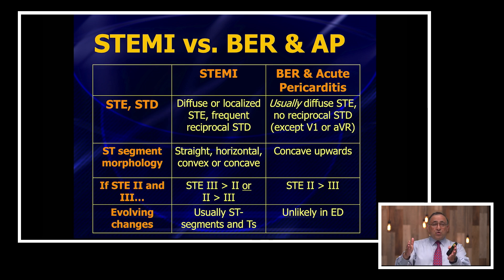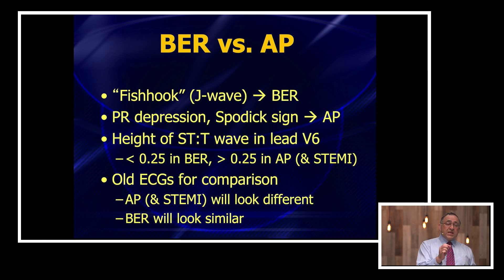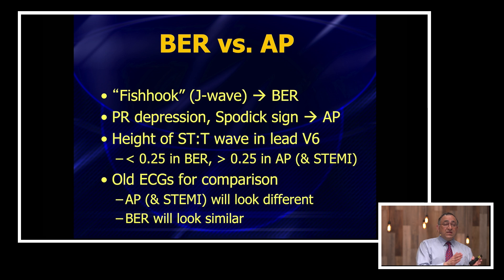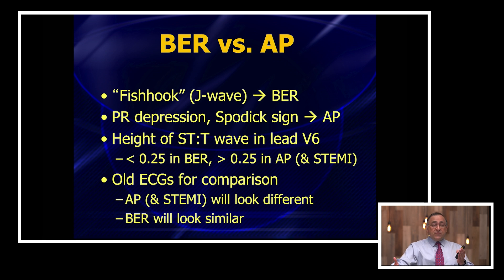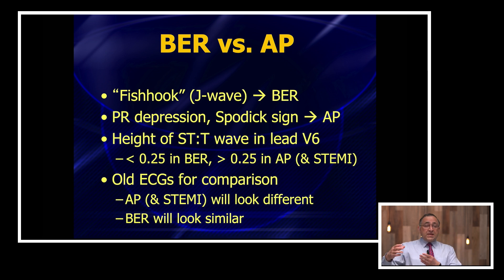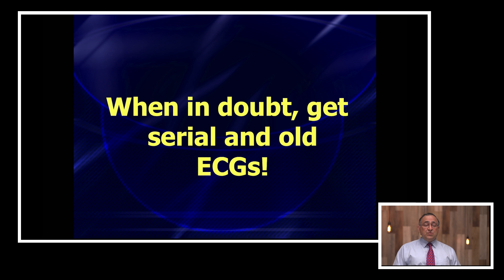Your next question is probably: how do I distinguish early repol from pericarditis? Look for the J wave or fish hook to point towards early repolarization. For pericarditis, look for PR depression or TP depression — the Spodick sign. We talked about lead V6 and comparing the height of ST elevation to the height of the T wave, which can be helpful. Get old EKGs for comparison — a patient with benign early repolarization will have early repol on their EKG from six months ago, whereas pericarditis or STEMI will look very different from old tracings. And when in doubt, get serial EKGs and look for any evolving changes.